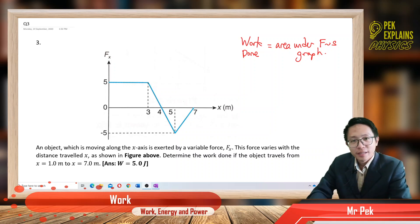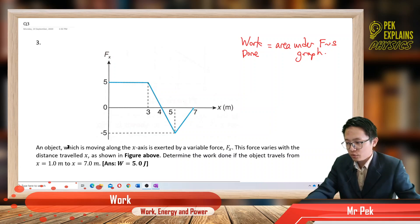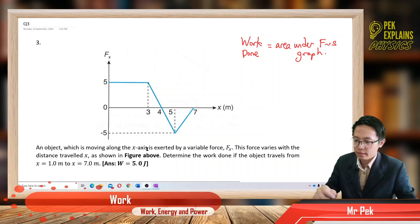Hi everyone, Mr. Pek here. Now we are in the third question for the topic work done. An object which is moving along the x-axis is exerted by a variable force, Fx. This force varies with the distance travelled x, as shown in the figure above. Determine the work done if the object travels from x equal to 1 meter to x equal to 7 meter.